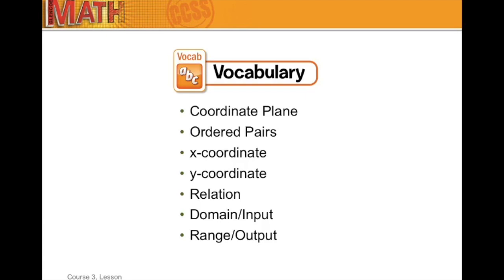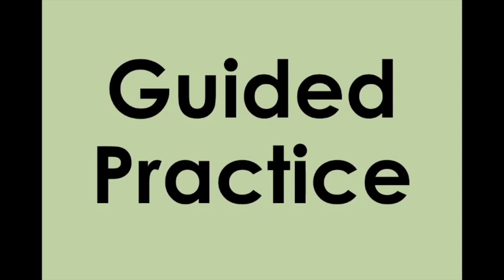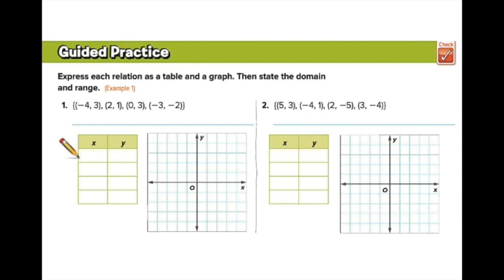Let's do a quick vocabulary review. The first four terms may not be in your notebook, but the last three are in your worksheets. Then let's move on to guided practice: express each relation as a table and a graph, then state the domain and range. I'll do example one with you, and then you'll test yourself on number two.